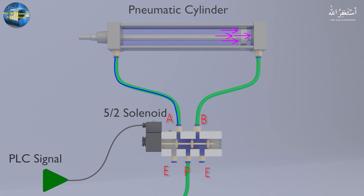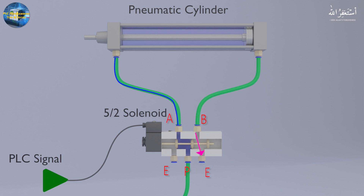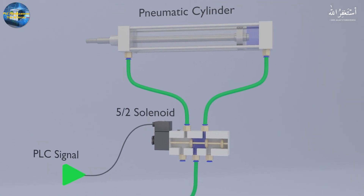Because of the force of the compressed air, the cylinder shaft moves backwards and gets fully retracted inside the cylinder body. The compressed air on the opposite side of the piston moves towards the solenoid through the pipes and gets exhausted into the atmosphere through port B, as port B is now linked with the exhaust port. This cycle of the solenoid valve turning on and off will continue as the PLC supplies signals to the solenoid valve.